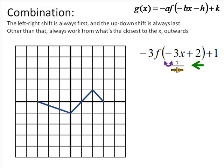Then we're going to have a left-right flip, then we make our way outside to that other 3, so that's going to be a stretch of 3, an up-down flip, and then the 1 on the end is going to take us up 1 unit.